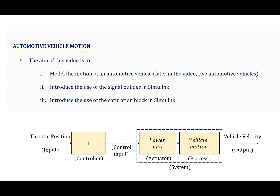The aim of this video is to model the motion of an automotive vehicle. Later we'll look at modeling two automotive vehicles in close proximity to each other, known as platooning. We'll introduce the signal builder in Simulink and also the saturation block. The aim is to look at automotive vehicle motion and relate throttle position to vehicle velocity.